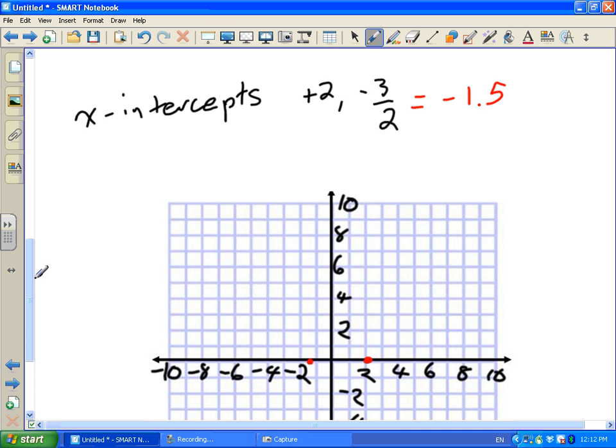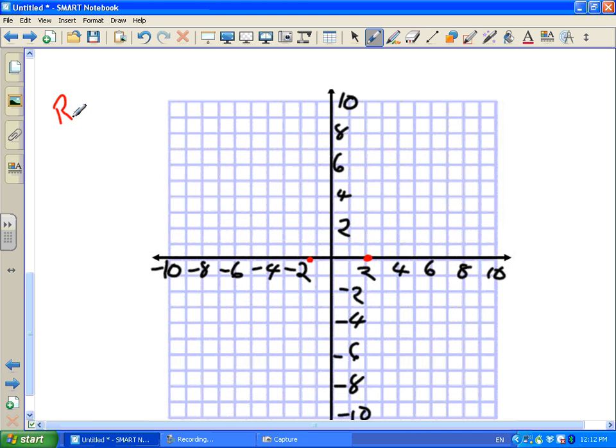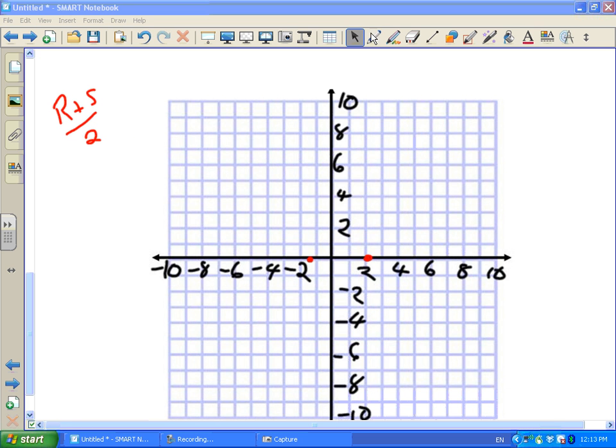Once again, I need to find my axis of symmetry. So we have that little formula, R plus S over 2. It's going to give us our axis of symmetry. And we can just call each one R, and this one S if we like.